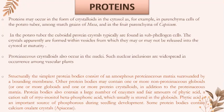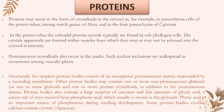Proteins may occur in the form of crystalloids in the cytosol, for example in parenchyma cells of the potato tuber. Proteinaceous crystalloids also occur in the nuclei. Such nuclear inclusions are widespread in occurrence among vascular plants.